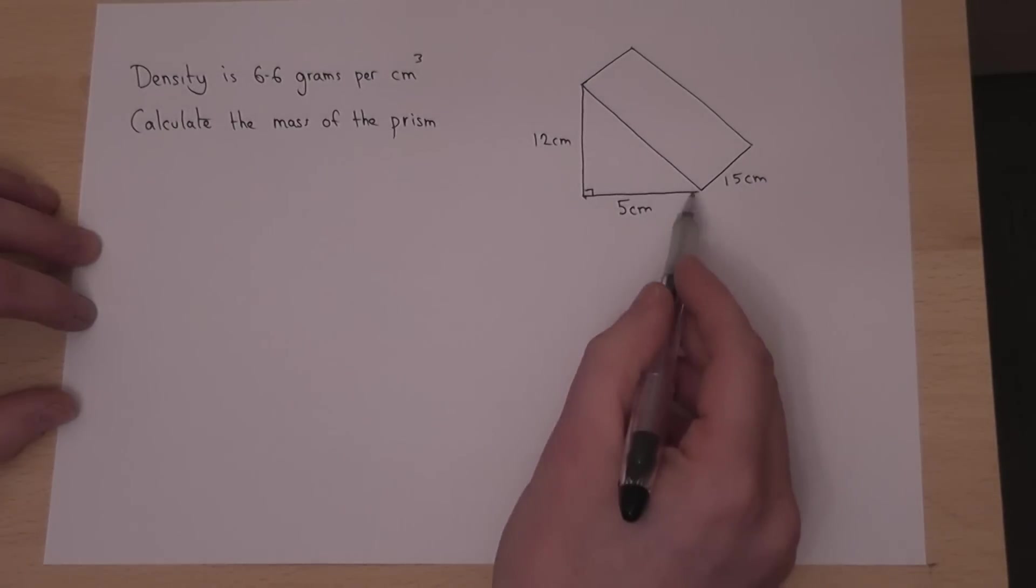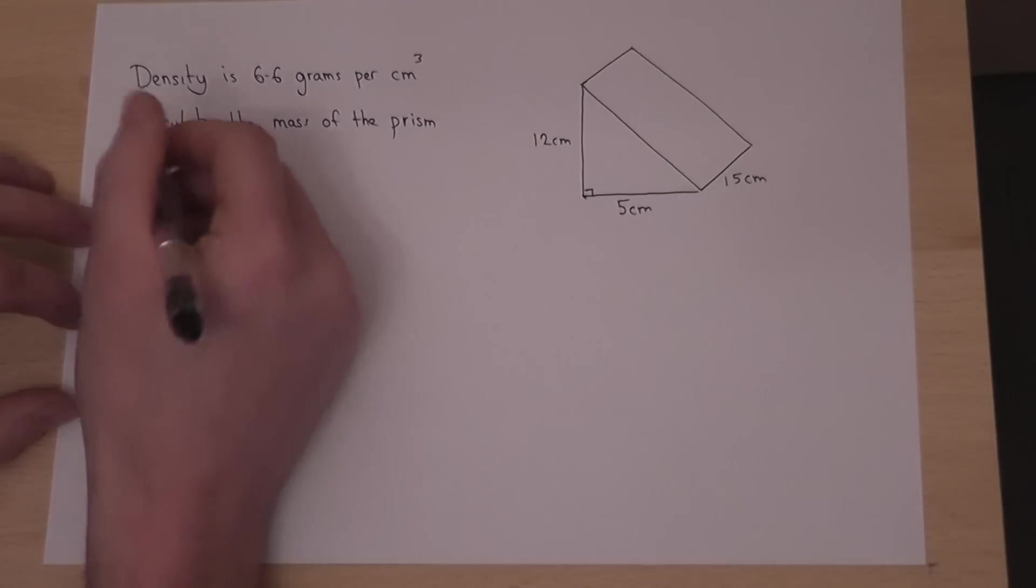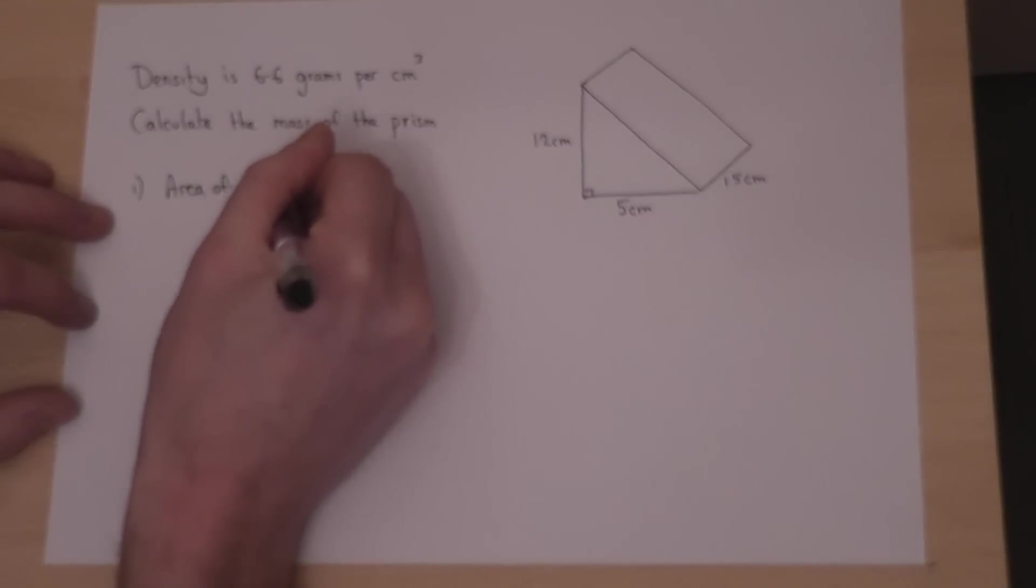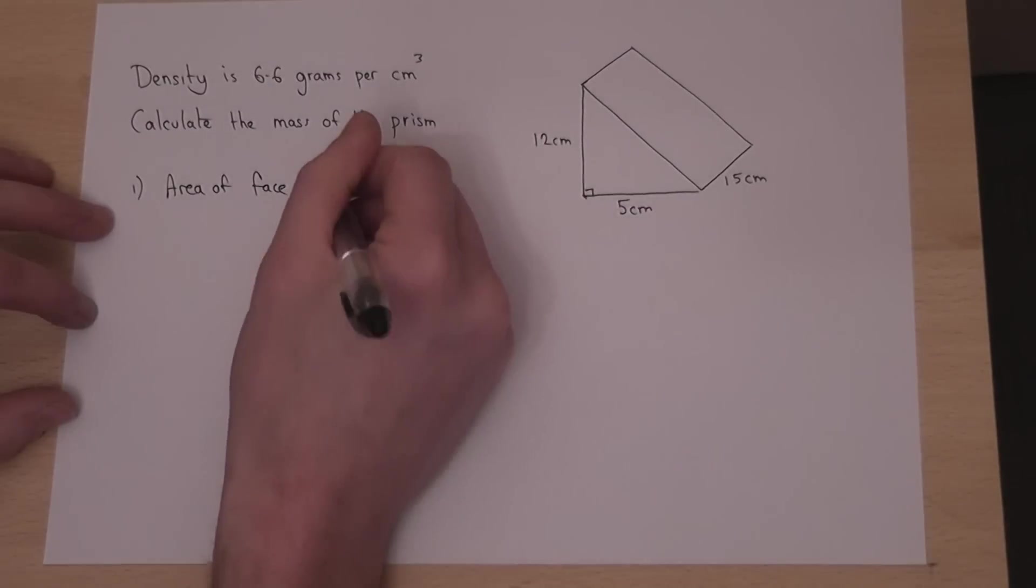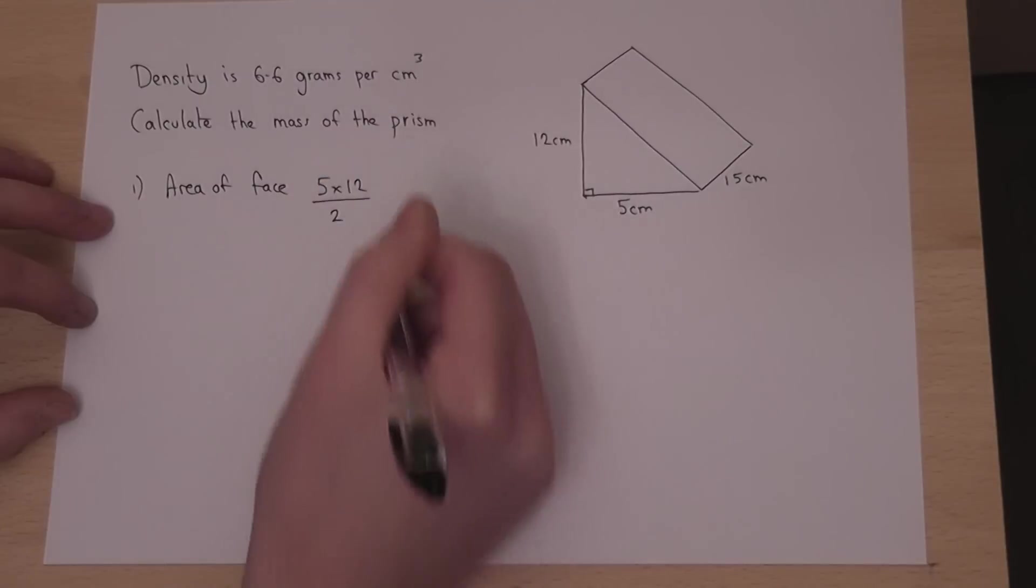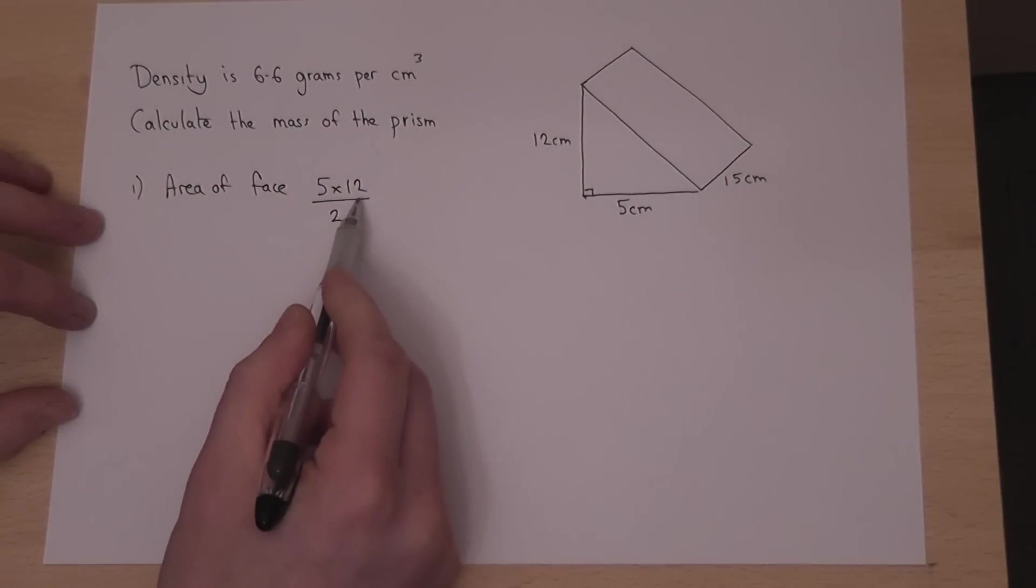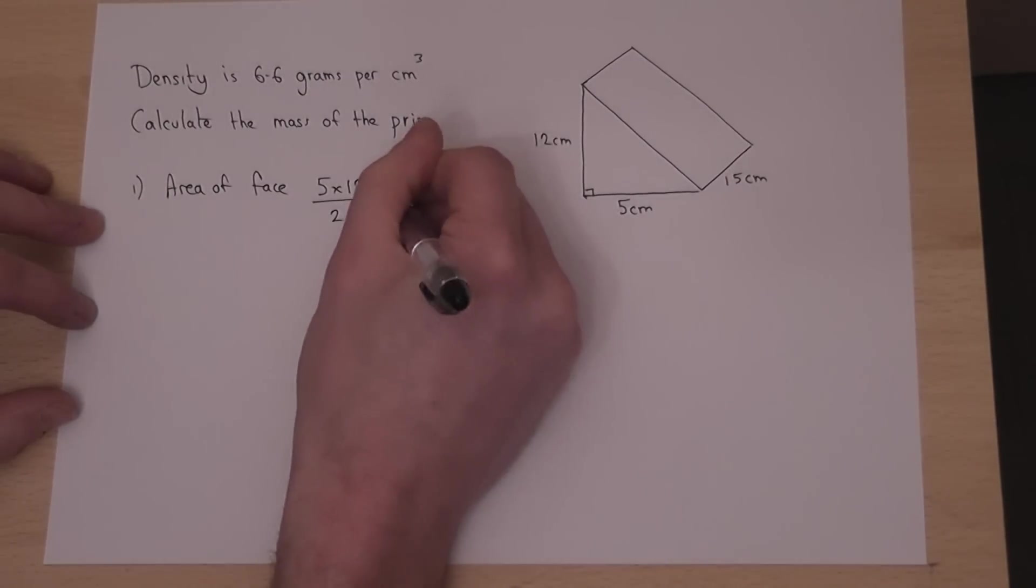Now then, this is a triangle, so the area of the face must be a half base times height. So 5 times 12 are halved. Well 5 times 12 is 60, halved, you get 30 centimetres squared.